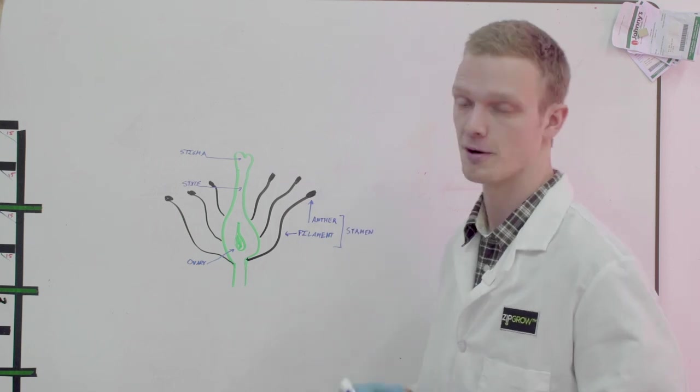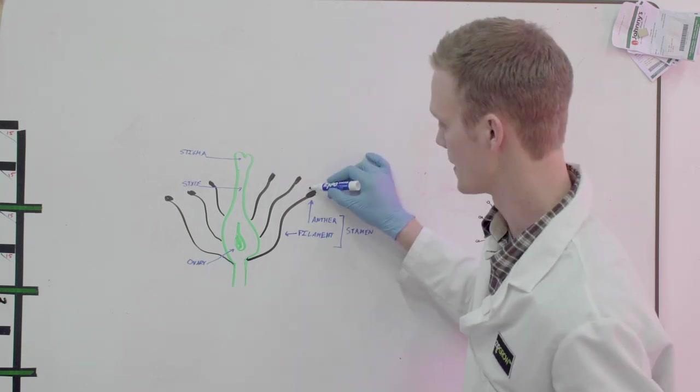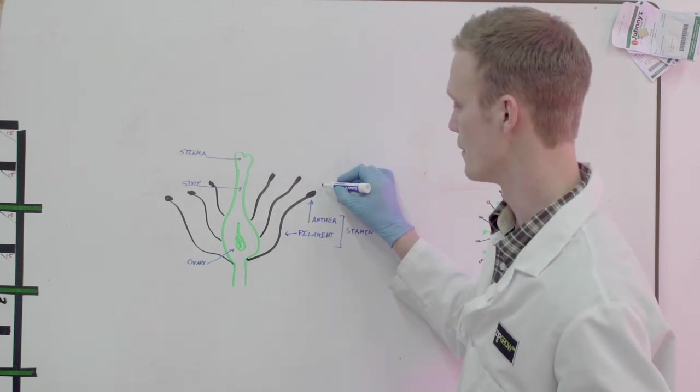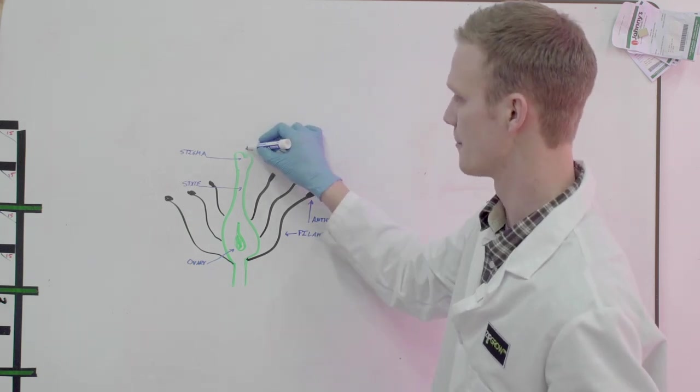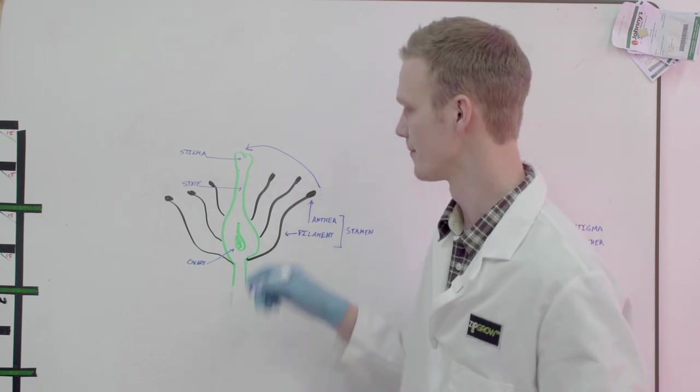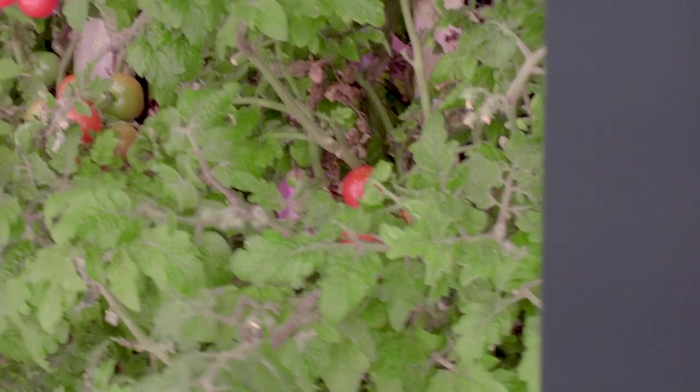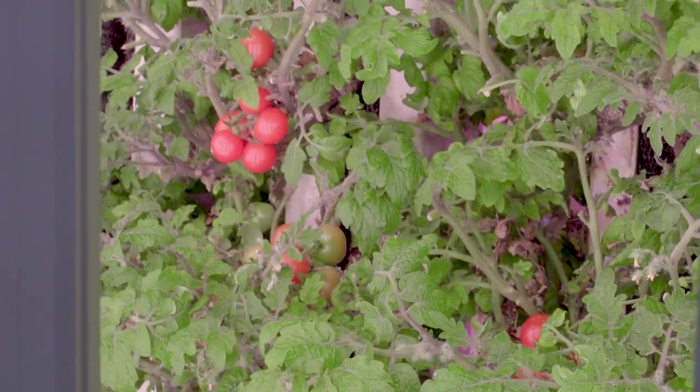The anther is where pollen is produced, so pollen is produced on the tips of the anthers and to pollinate a flower successfully the pollen needs to move from the anthers to the stigma. Once it reaches the stigma it grows a root down into the ovary and the flower is pollinated or fertilized and this grows into your fruit.